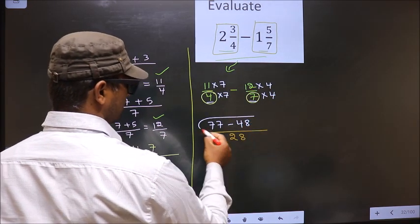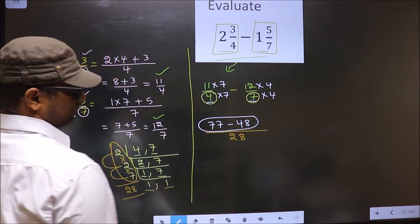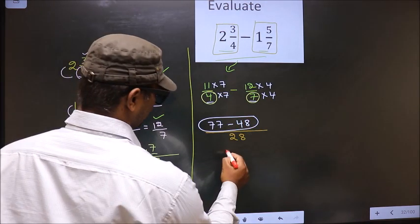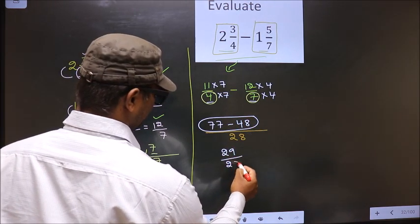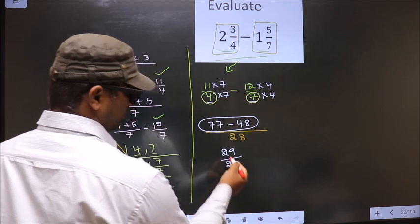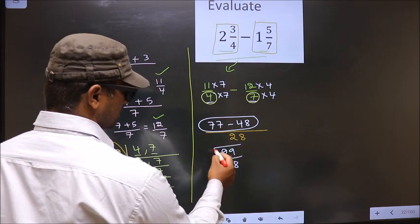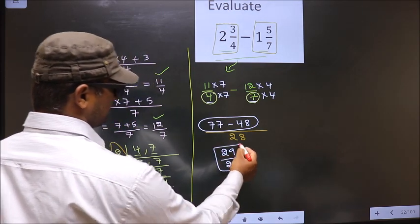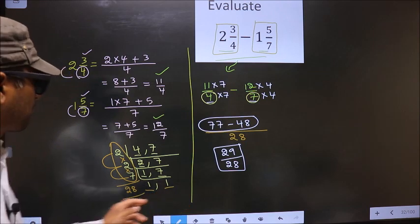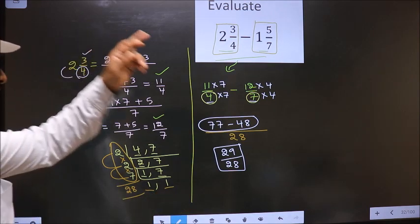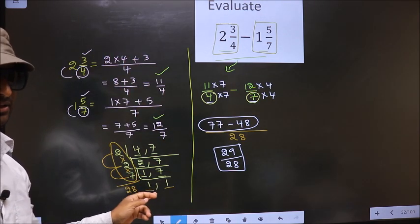Now you subtract these two. We get 29 by 28. We cannot simplify this fraction, so this is our answer.